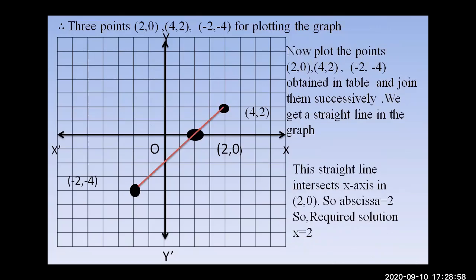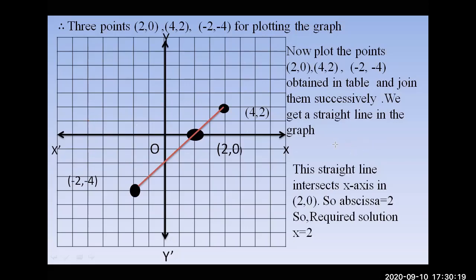The straight line intersects the x-axis. When a line intersects the x-axis, the y-value is always zero. The line intersects the x-axis at the point (2, 0), so the abscissa is 2. Therefore the required solution is x = 2.